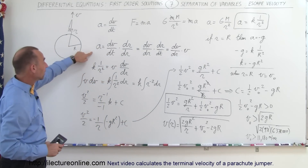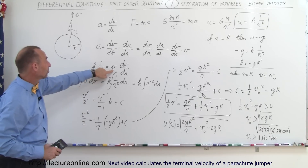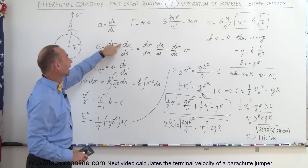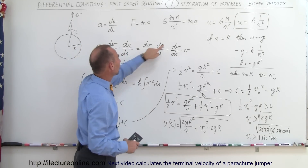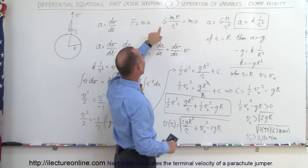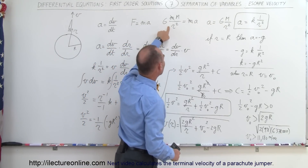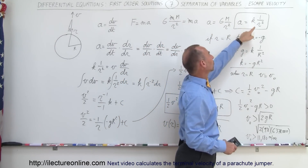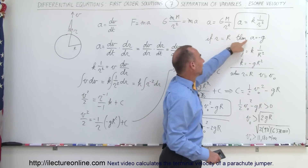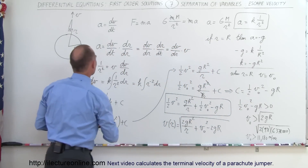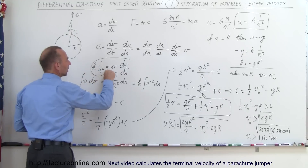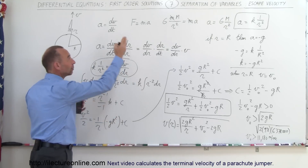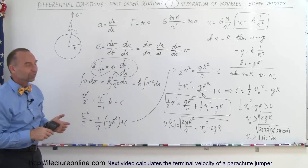Quick review: we want an equation relating velocity to position. We do that by starting with acceleration as dV/dt, introducing the R variable to rewrite it as dV/dr times V. Using F equals ma with Newton's gravitational force law, acceleration equals GM over R squared, or K times 1 over R squared, with K equals negative gR squared at Earth's surface. Combining these gives a first-order differential equation we solve using separation of variables.